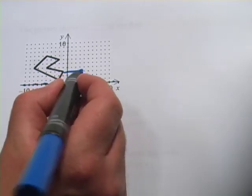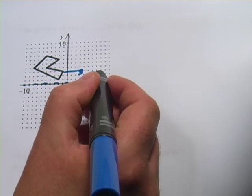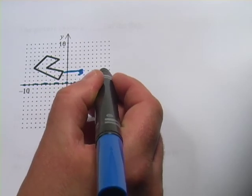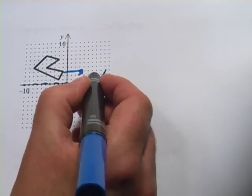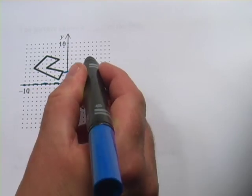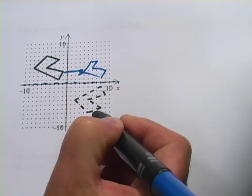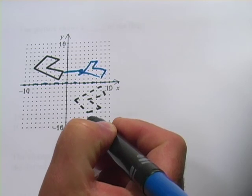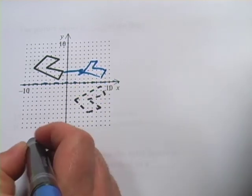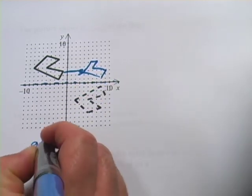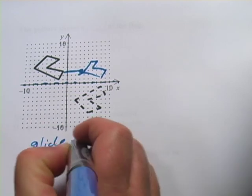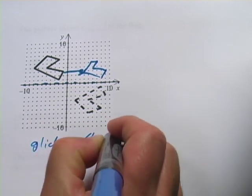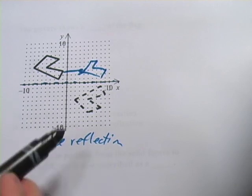So let's say we moved this one over here so it looked like this, if I can do this right, and then reflected it over that line. So this is actually what we would call a glide reflection because it's been translated and then reflected.